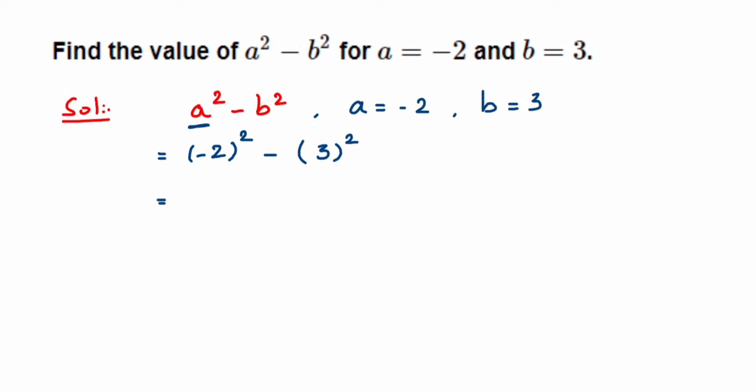Now minus 2 squared is nothing but you're multiplying minus 2 two times, that is minus 2 into minus 2. So multiply the number: 2 times 2 is 4, and then minus into minus is plus, so it will be positive 4.